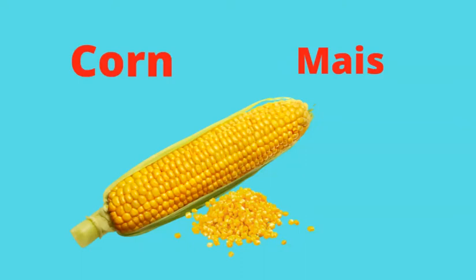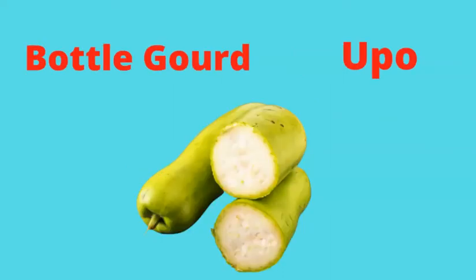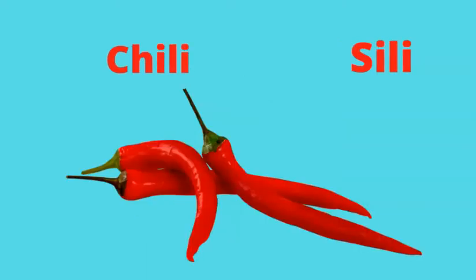Corn — mais. Bottle gourd — opo. Chili — sili.